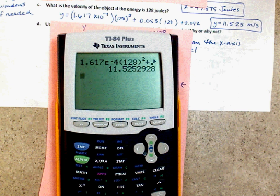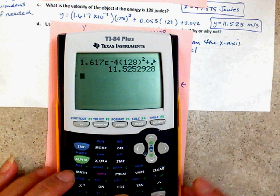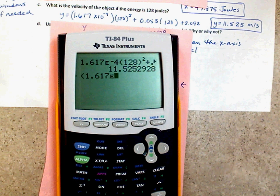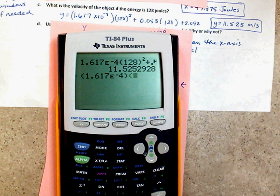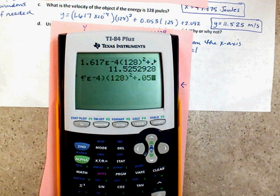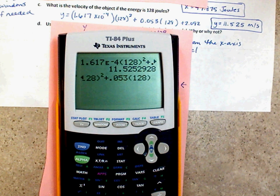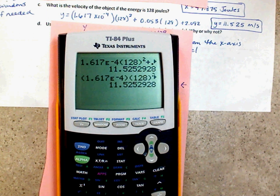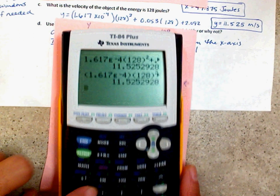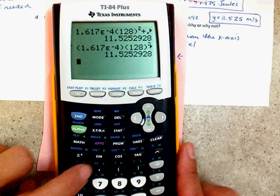128 square plus .053 times 128 plus 2.092. And I got 11.525 meters per second. And that's how I got that answer. And if you like, you can put parentheses around it. Just like this. If you like that better. And that's fine. You're going to get the same answer. Plus 2.092. Same answer. So you can type it together. Alright. So there's that times 10. That's the scientific notation.